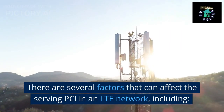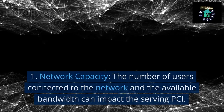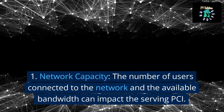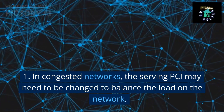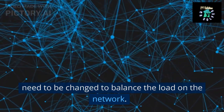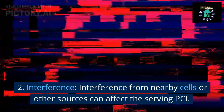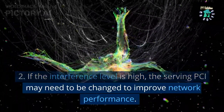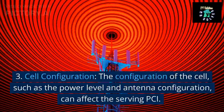There are several factors that can affect the serving PCI in an LTE network. First, network capacity: the number of users connected to the network and the available bandwidth can impact the serving PCI. In congested networks, the serving PCI may need to be changed to balance the load. Second, interference from nearby cells or other sources can affect the serving PCI.